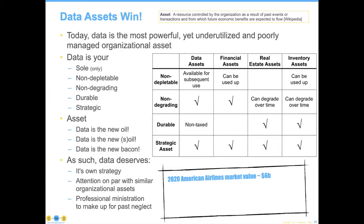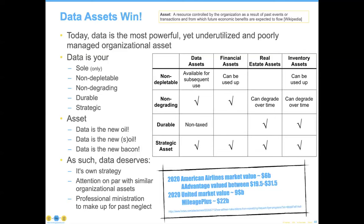I'm going to show you what I consider to be an egregious example of this. In 2020, both American and United Airlines were valued by a Forbes marketplace article at $6 billion and $9 billion US respectively. But they were valued with the data in their frequent flyer programs at being tens of billions of dollars over this. Do you not believe that if the head of American Airlines and United could figure out the way to unlock the value they have in that data, it would be absolutely astounding? You could buy American Airlines for $6 billion and sell it for just slightly less, and just keep the data as that $10 billion asset off the top.